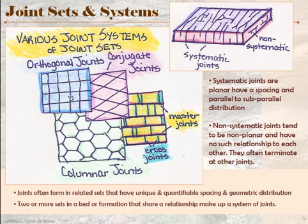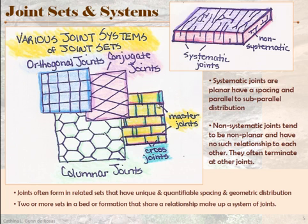For instance, we have a set here that is sort of vertical in this picture and then a horizontal set — together they make up what we call an orthogonal joint system. Here is another joint system that is not orthogonal: you have one set moving at an angle one way and another set placed at an angle the other way — we call those conjugate joint systems. We can also talk about master joints, which move all the way through, and little cross joints that terminate in these master joints and don't cross them, because the master joint acts as a free surface.